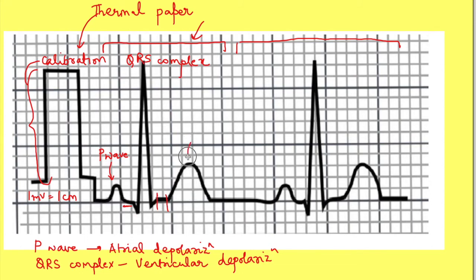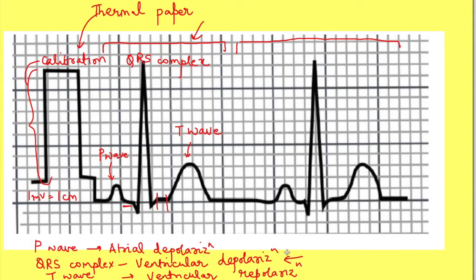After that we get another wave, the T wave, which occurs due to ventricular repolarization. You may ask where atrial repolarization is recorded. Atrial repolarization occurs at the same time as ventricular depolarization, so the voltage change there is merged with the QRS complex. This is the convention we follow while naming the waves, starting with P wave till T wave.